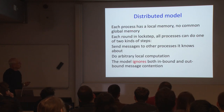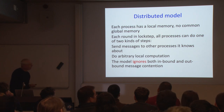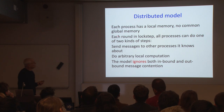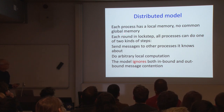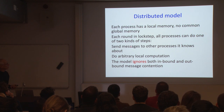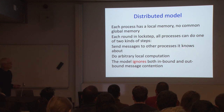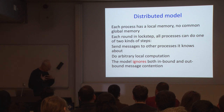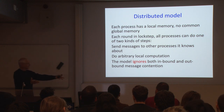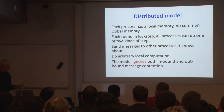In the distributed model: there's no common shared memory. Each process has local memory. All processes run in lockstep; in one step, each process can do some amount of computation, send messages to other processes it knows about, and receive messages. You can think of it as a round of receiving messages, doing computation, and sending messages — ignoring both inbound and outbound message contention to keep things simple.